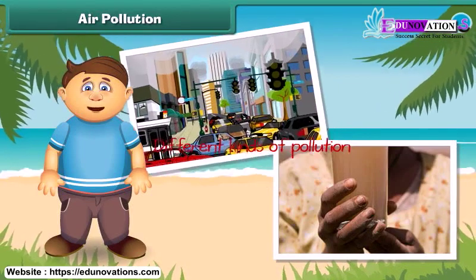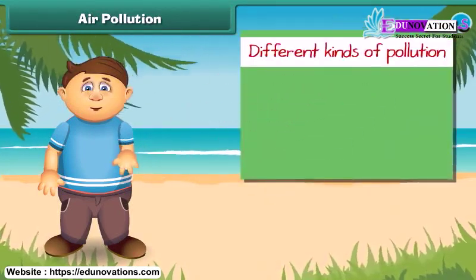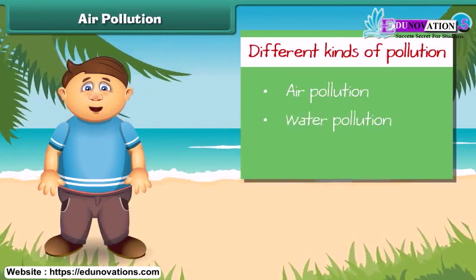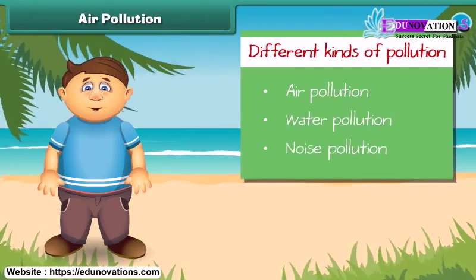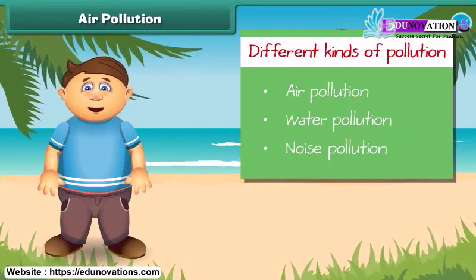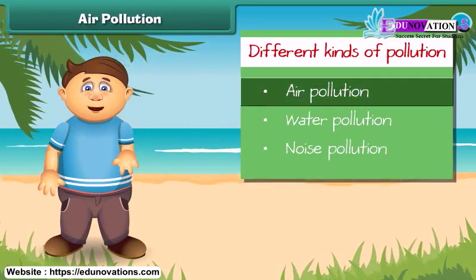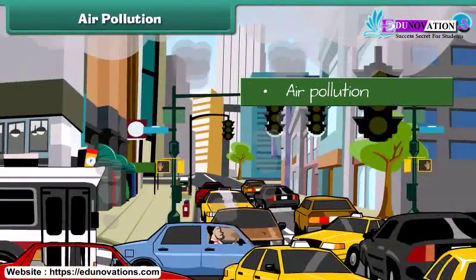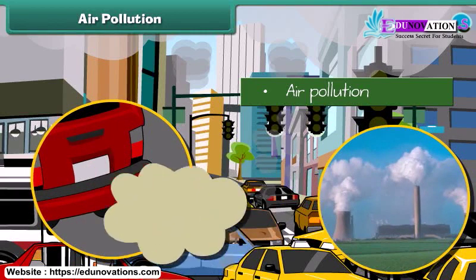Pollution is mainly of three types: air pollution, water pollution, and noise pollution. First, let's know about air pollution in detail. Air gets polluted when unwanted substances — air pollutants — enter into it. These substances come due to burning of fuels and emission of poisonous gases from industries.